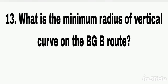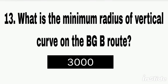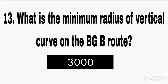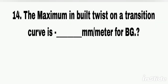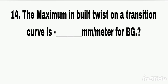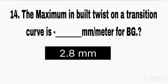Q13. What is the minimum radius of vertical curve on the broad gauge B route? Answer: 3,000 meters. Q14. The maximum inbuilt twist on a transition curve for broad gauge. Answer: 2.8 mm per meter.